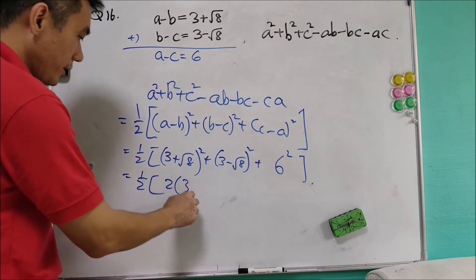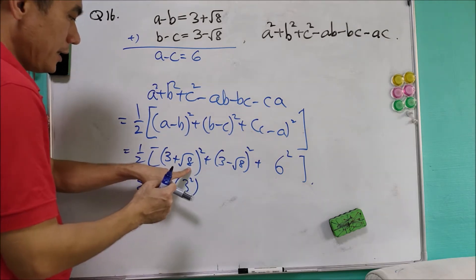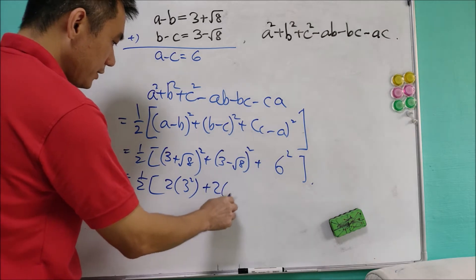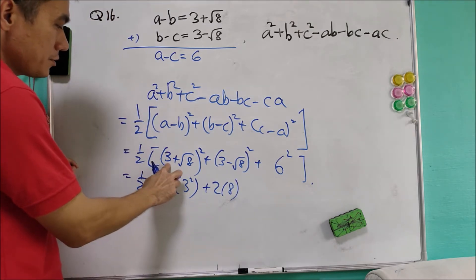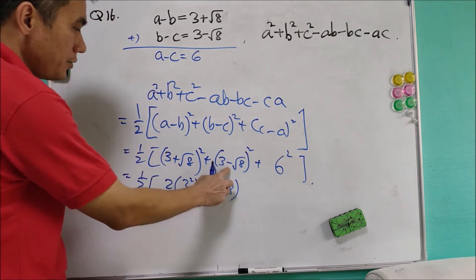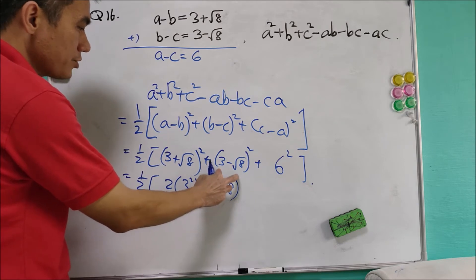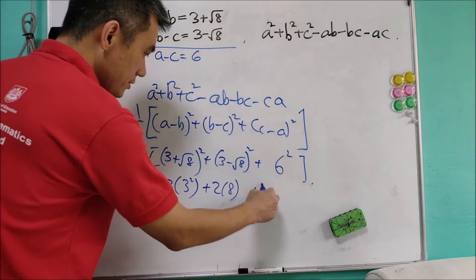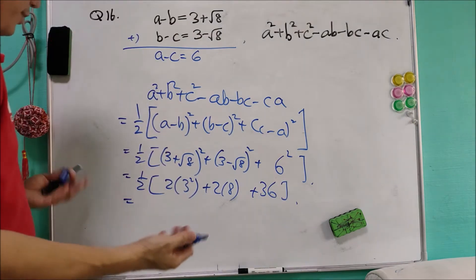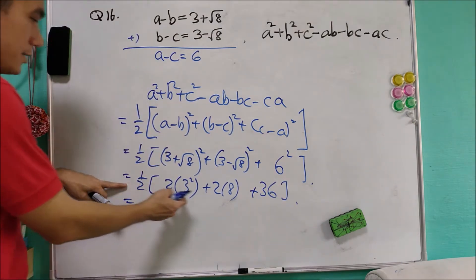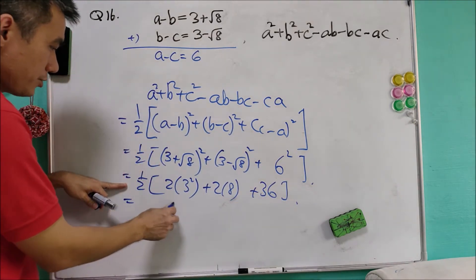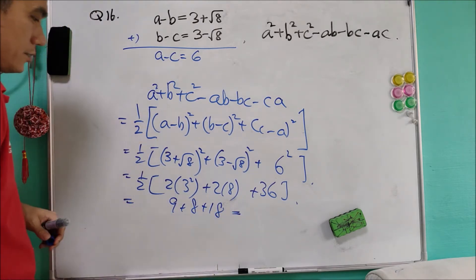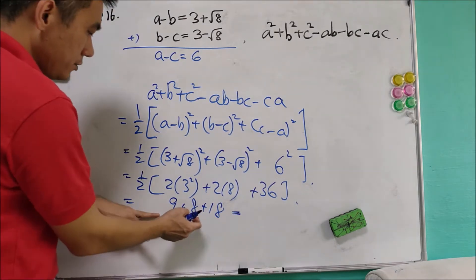We just need to calculate: (3 plus √8) squared plus (3 minus √8) squared plus 6 squared. Expanding: 3 squared gives 9, the cross terms 2 times 3 times √8 and negative 2 times 3 times √8 cancel off. We have 8 and 8 remaining, plus 36. So we get half of 9 plus 8 plus 9 plus 8 plus 36, which is half of 70, giving 35.